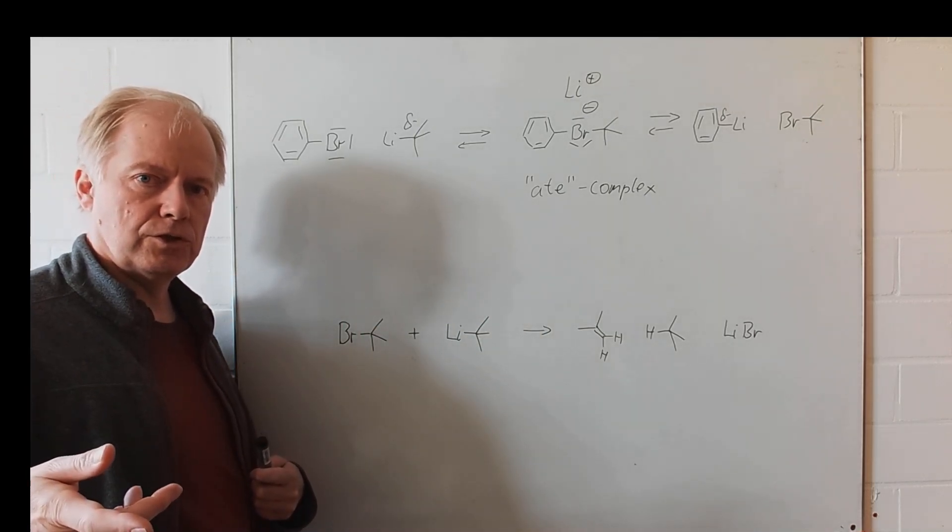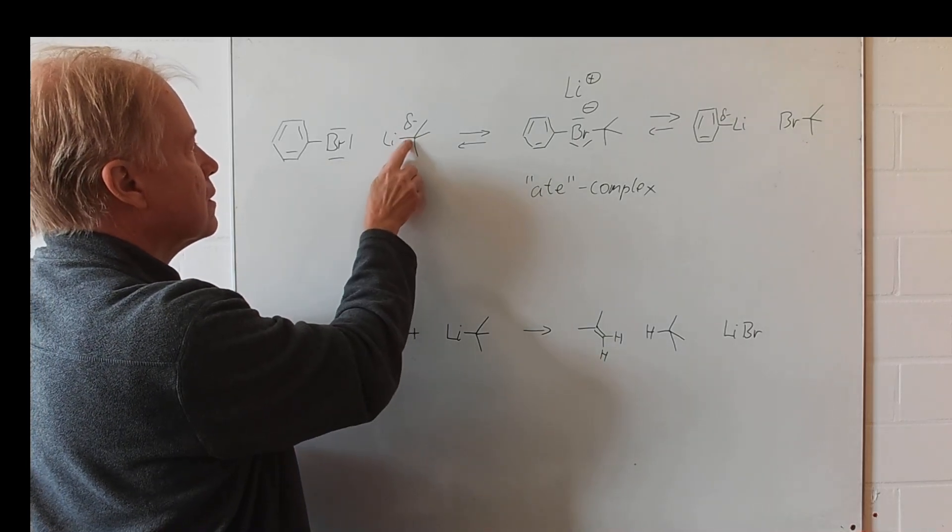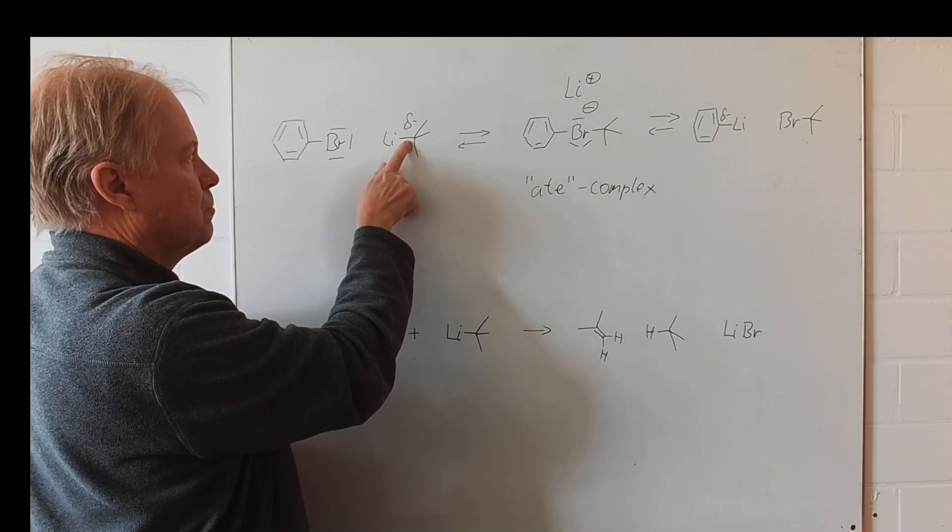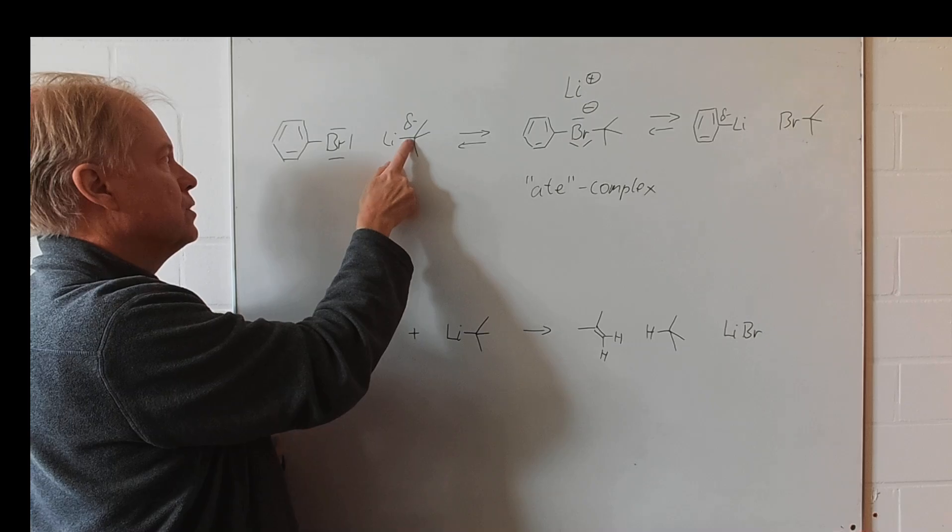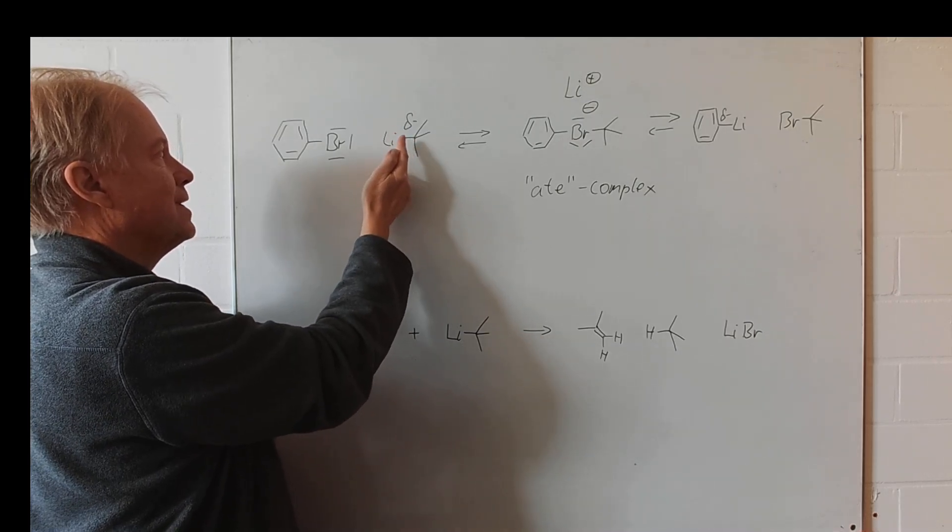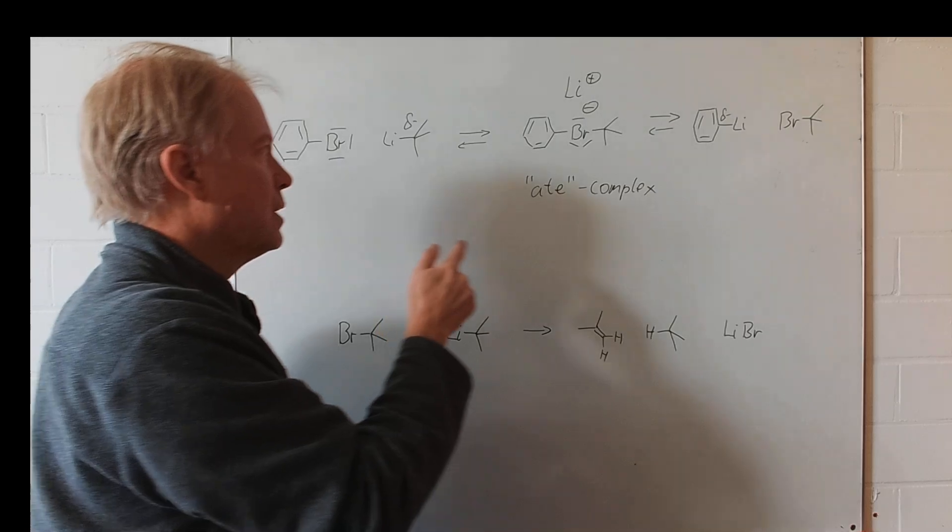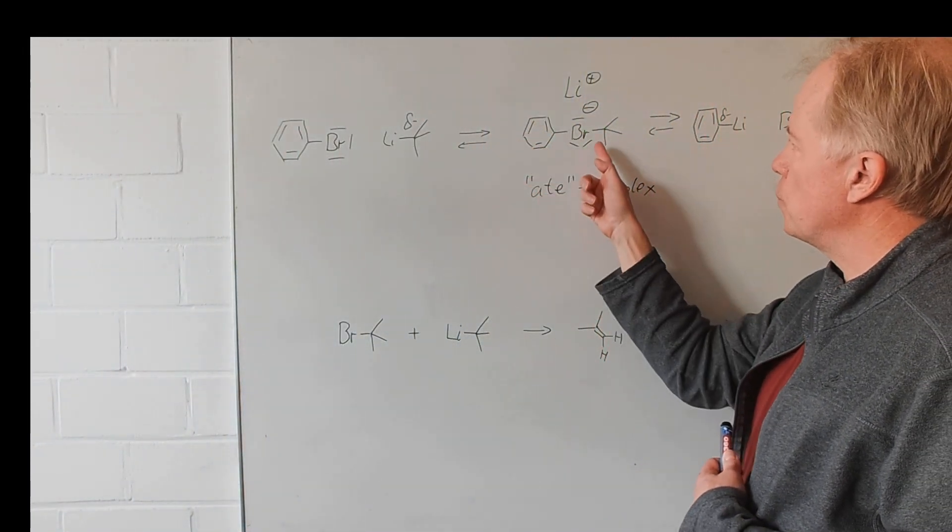With tertiary butyl lithium we have a negatively, partially negatively charged carbon which is nucleophilic. It will attack as a nucleophile at bromide. Such a linear complex is formed with two bromine-carbon bonds and three free electron pairs at the bromine.